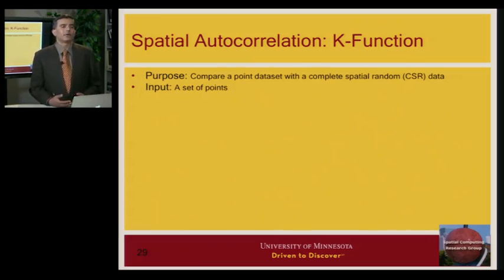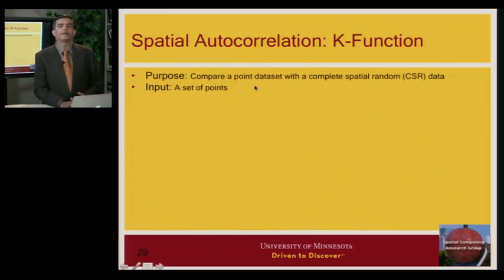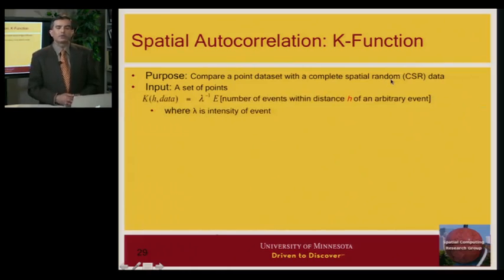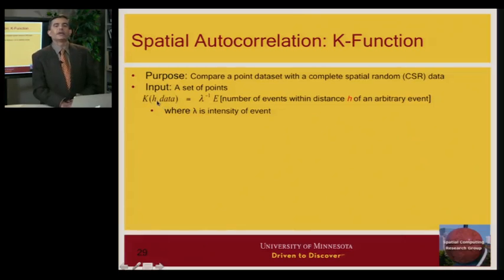We will take one example called Ripley's K function, which works for point datasets. Imagine you have a collection of locations of trees, cholera deaths, or crimes. Given this set of points, we want to ask whether these points are completely random and independent of each other, or whether they interact. The K function takes a dataset and a parameter h, which is a radius or distance.